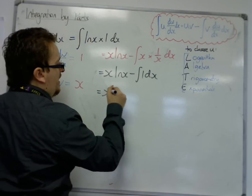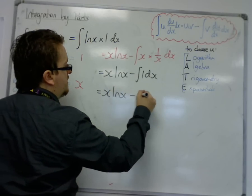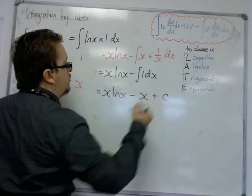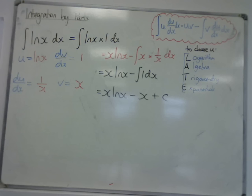So the integral of 1 is x, so that's just x log x, take away x, and you need to make sure you have your plus c constant of integration on the end.